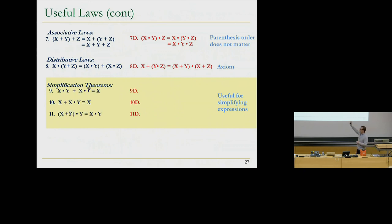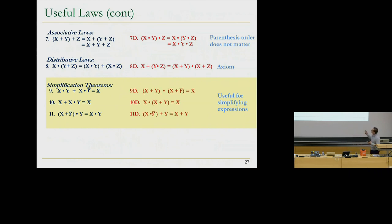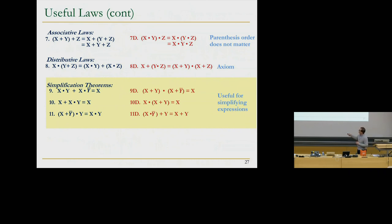Simplification theorem: X AND Y, OR X AND Y-bar simplifies to X — Y doesn't matter. You can convince yourself by building the truth table. The dual is also true: X OR Y AND X OR Y-bar equals X. X OR X AND Y evaluates to X. We're going to prove that in a little bit. And the dual of that is also true. This happens a lot in circuits — you end up with an X input and X ANDed with Y, and you can simplify by getting rid of the AND gate.